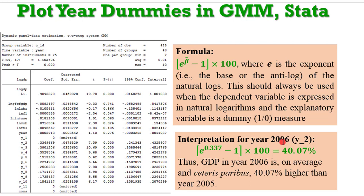For instance, if we want to interpret year 2006, the coefficient for year 2006 is 0.337, and in this data year 2006 is coded as year 2. All you have to do is plug in the coefficient of the year you want to interpret, solve this, deduct 1 from it, then multiply by 100. Doing that we obtain 40.07%. The GDP in year 2006 is on average and ceteris paribus 40.07% higher than that of year 2005.